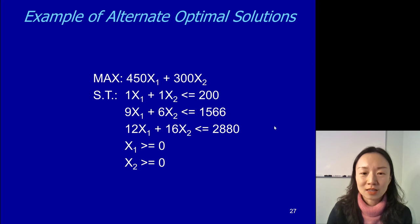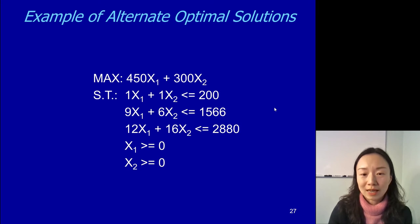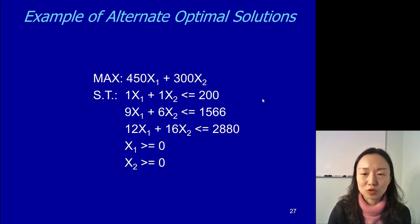So first let's look at this example. This is an example of alternate optimal solutions. Let's plot this on the coordinate system and see how the optimal solution will look like. Look at the model and plot it on your graph — take out a piece of paper, draw the coordinate system and plot the feasible region and also the objective function's level curve. Pause the video now and plot it yourself.